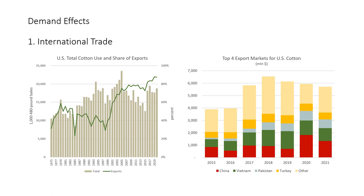This means that in the recent decade, U.S. cotton demand has been largely driven by world cotton demand and, in particular, by what has been happening in the economies of its major cotton trading partners. The top four export markets for U.S. cotton between 2015 and 2021 show that China and Vietnam are the largest importers of U.S. cotton. For example, there is an ongoing trade war with China. In 2018, the U.S. imposed tariffs on imports of solar panels, washing machines, aluminum, and steel from selected trading countries including China.